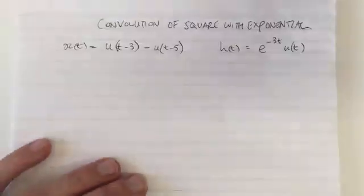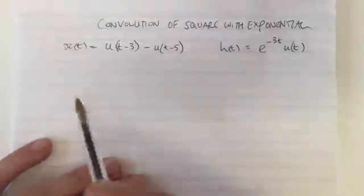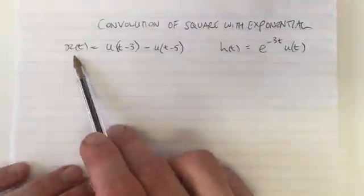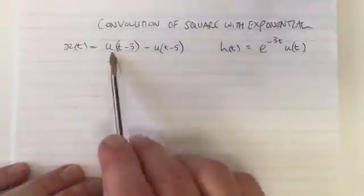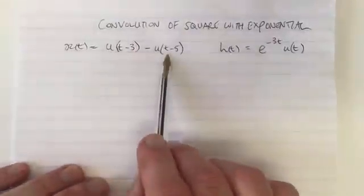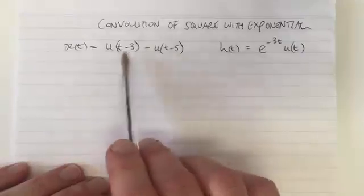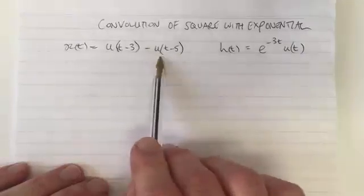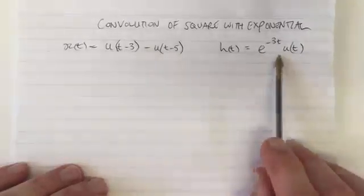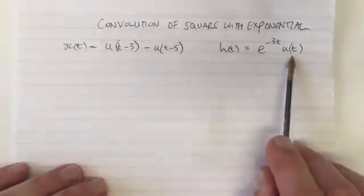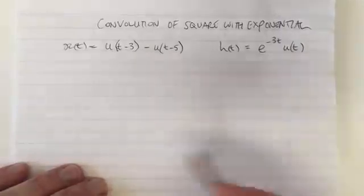Let's do this example of a convolution. On the left we have a function which involves two step functions, one minus the other, and on the right an exponential multiplied by a step function.